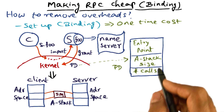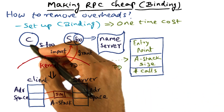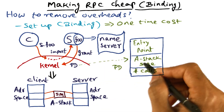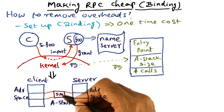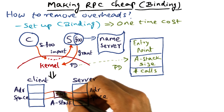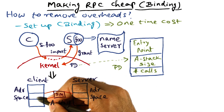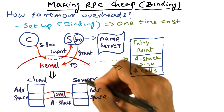The server is telling the kernel: in order for us to communicate, I need a buffer, and the size of the buffer is this much. So the kernel allocates shared memory and takes the shared memory that is allocated, and maps it into the address space of both the client and the server.